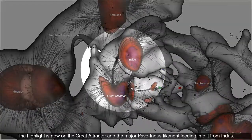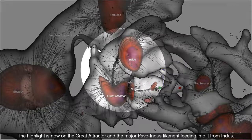The highlight is now on the greater attractor and the major Pavoindus filament feeding into it from Indus.